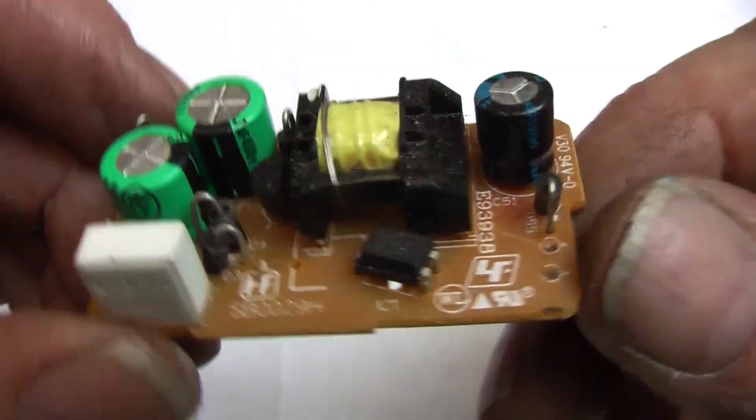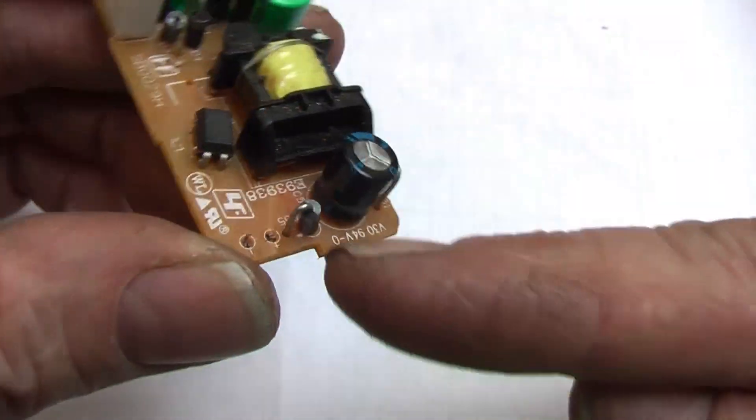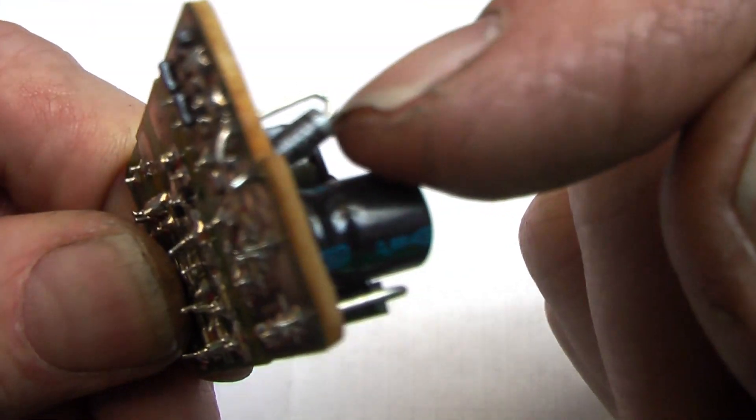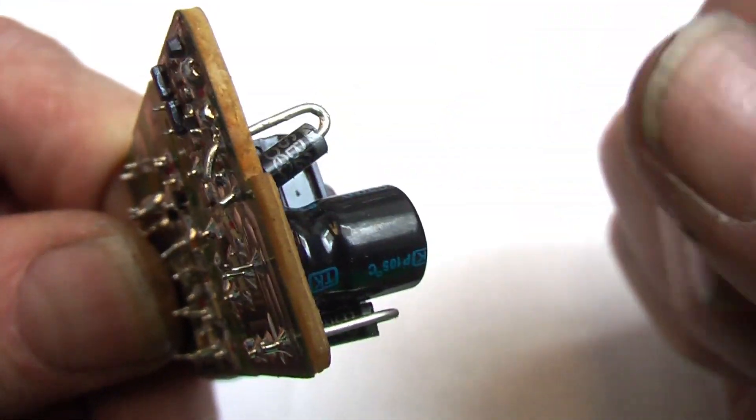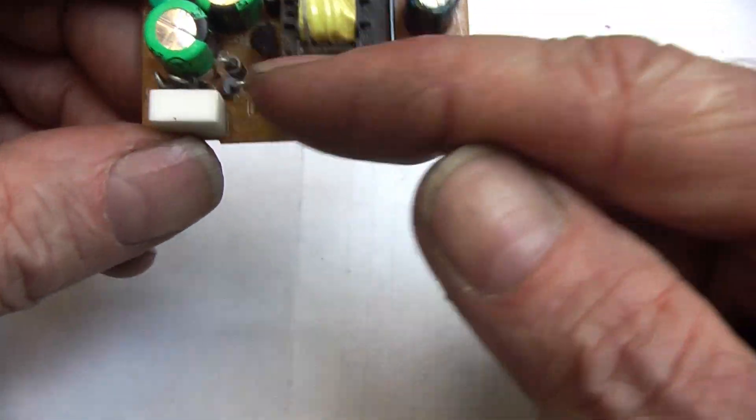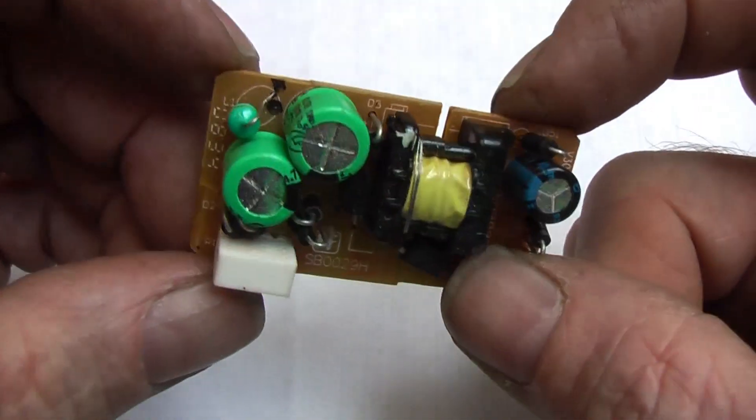Now if you are going to make a bridge rectifier, where can you get your diodes from? Look on some electronic boards like this, and you will find them, they are little, those little black things here. And you can unsolder those and reuse those. And on this board we have got one, two, three, four, five, six, seven of them on this board, so that will be useful.